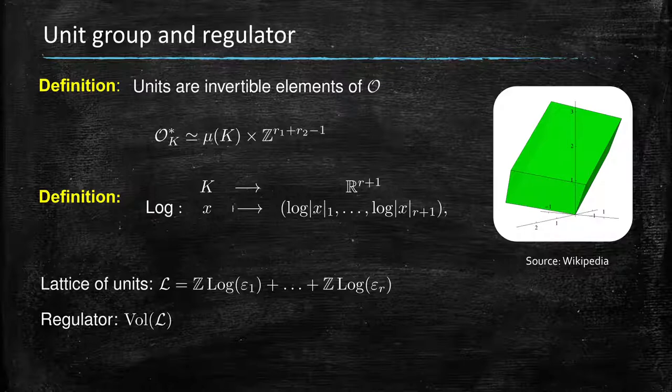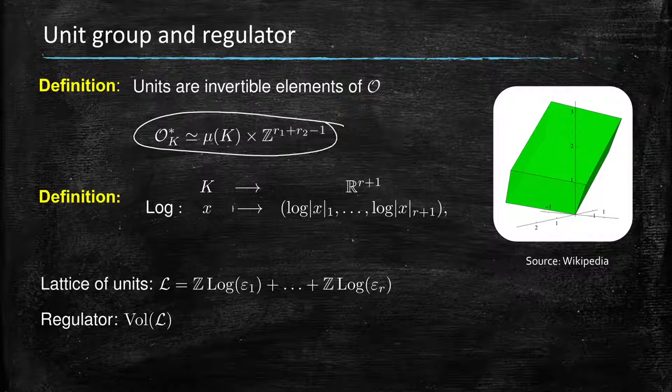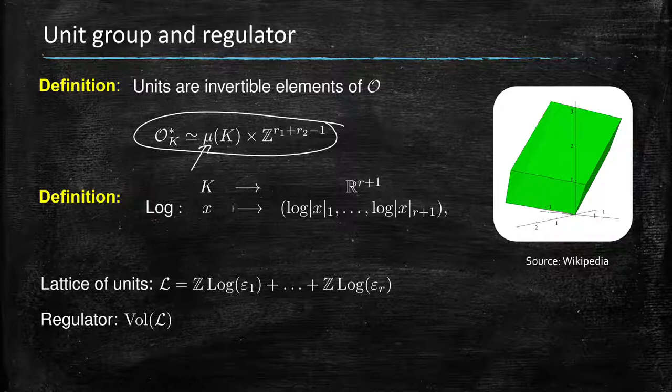...and in particular, they have this interesting structure where we have a product of the torsion units, so the roots of unity, so a finite group here, and a torsion-free part, something that is isomorphic to Z to the r_1 plus r_2 minus 1, where r_1 is still the number of real embeddings and r_2 the pairs of complex embeddings. So the signature of the field tells you the structure of the unit group...